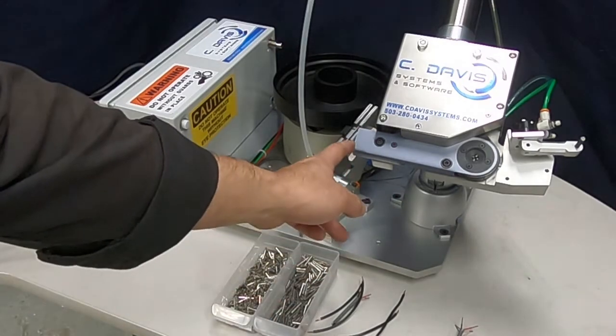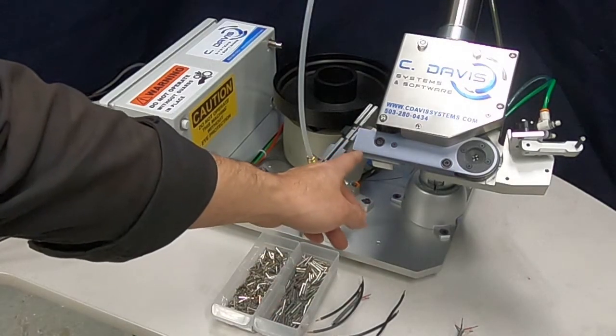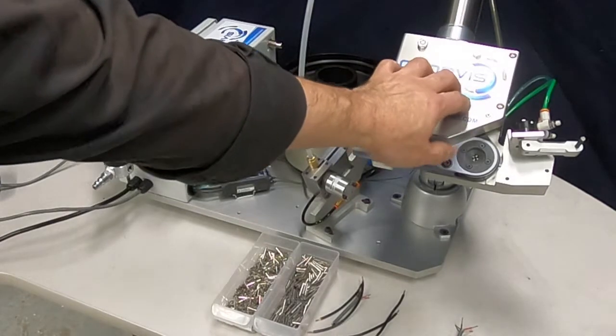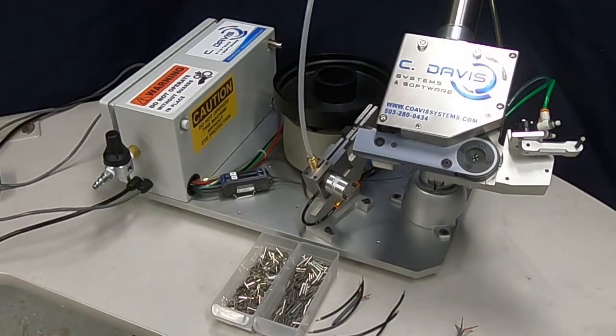The crimp head has been redesigned. We get a little bit better leverage now. We also have these stainless steel covers, which are much more rugged than the old plastic ones.